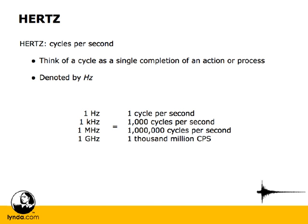Hertz is represented by a large H and a little Z, and then a few prefixes. For instance, in our chart, we have 1 hertz, or 1 cycle per second; 1 kilohertz, or 1,000 cycles per second; 1 megahertz, or a million cycles per second; and 1 gigahertz, or 1,000 million cycles per second.